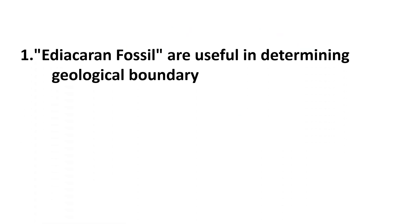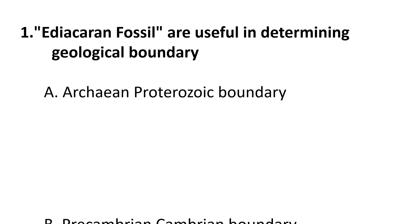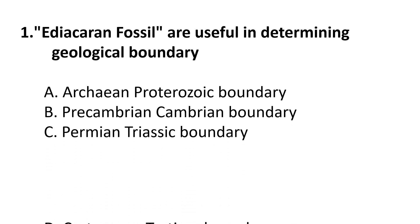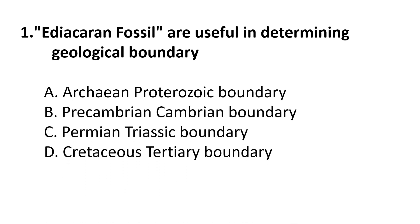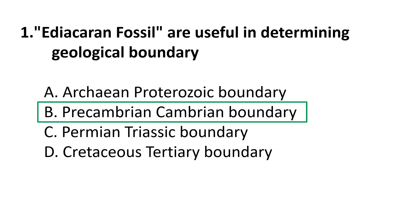First question: Ediacaran fossils are useful in determining which geological boundary? Choices are: A) Archaean-Proterozoic boundary, B) Pre-Cambrian–Cambrian boundary, C) Permian-Triassic boundary, D) Cretaceous-Tertiary boundary. The correct answer is B, Pre-Cambrian–Cambrian boundary.